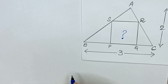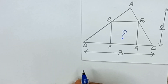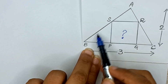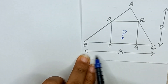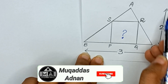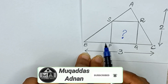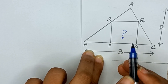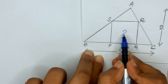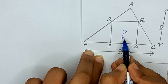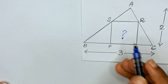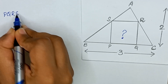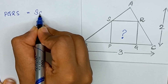Assalamualaikum friends, welcome back to my channel. In this video we have given triangle ABC with its base equal to 3 and its height equal to 2. PQRS is a square inscribed in the triangle, and we have to find the area of this given square.